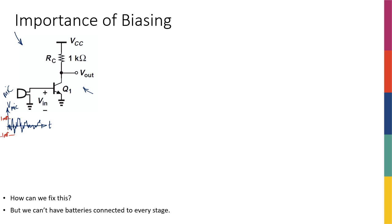We're going to have two full weeks talking about amplifiers and designing different amplifier topologies. For now, please accept that this is an amplifier. We're going to draw the small signal model of the circuit, analyze it, learn the importance of biasing, and move on. We'll go back to the topic of amplifiers and how to design and analyze them later.